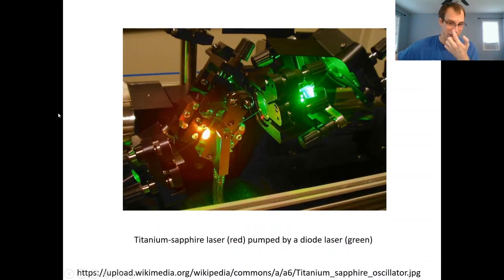This is a Ti-Saf laser, so the red light is the Ti-Saf laser, and then a diode laser or semiconductor laser is being used to pump it. So this is an example of optical pumping, and so you need a laser to generate another laser.